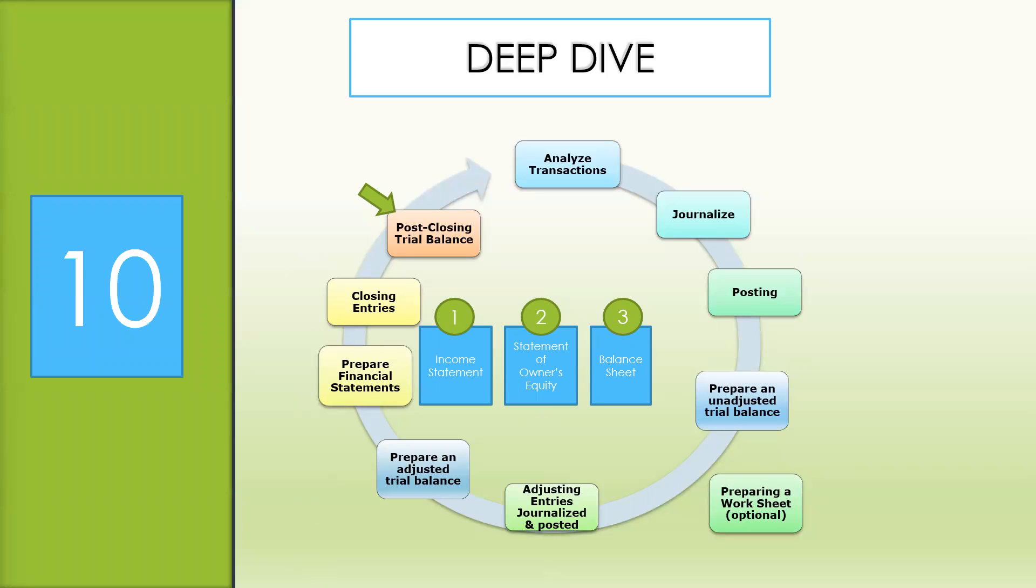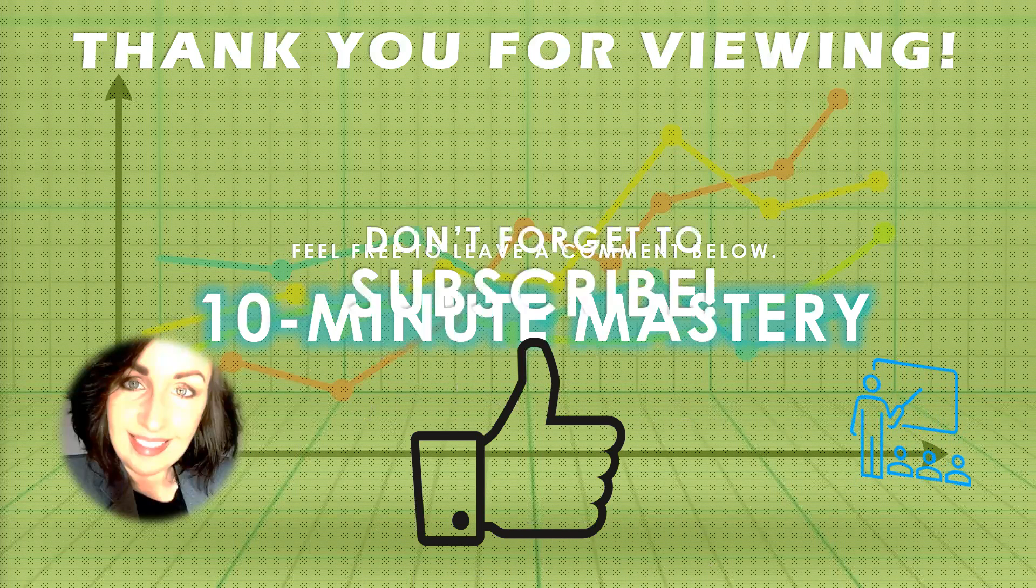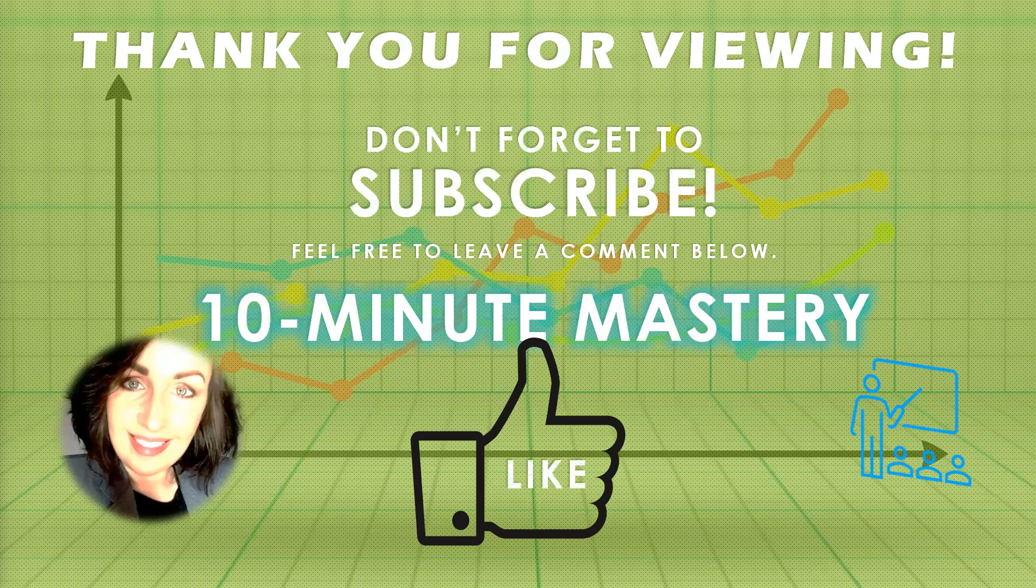Then we get to step 10. In step 10, a post-closing trial balance is prepared. After this is prepared, we have completed the 10-step accounting cycle. For the next period, the cycle begins all over again with analyzing transactions. Thank you for viewing. Don't forget to subscribe and push that like button.